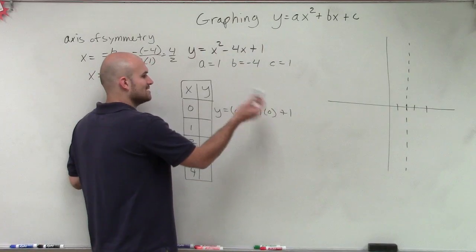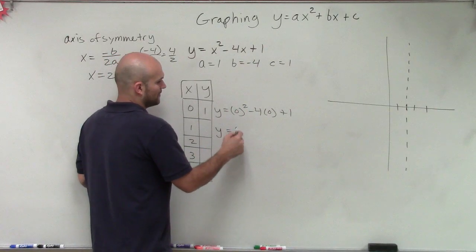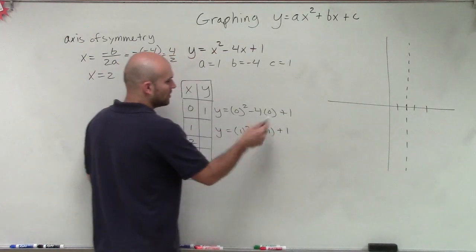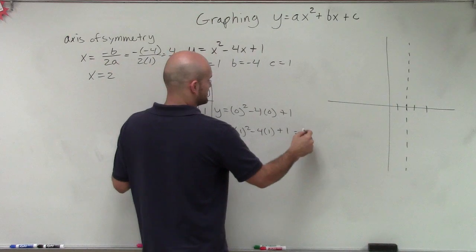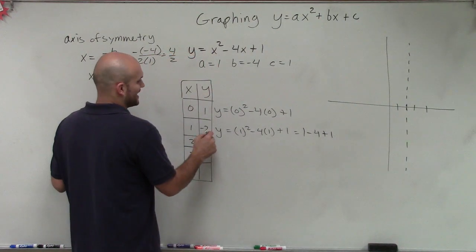0 squared is 0 minus 4 times 0 is 0 plus 1 is going to be 1. Then I do it for the 1. 1 squared is 1. So 1 minus 4 plus 1, that's going to be negative 2.